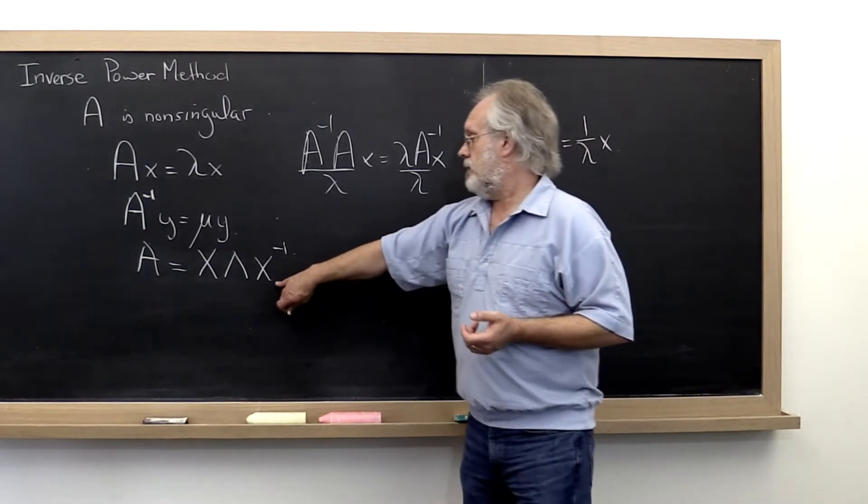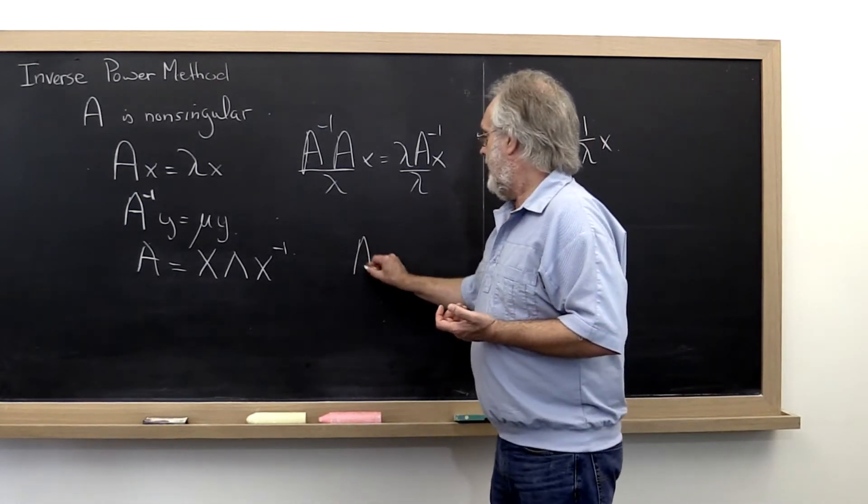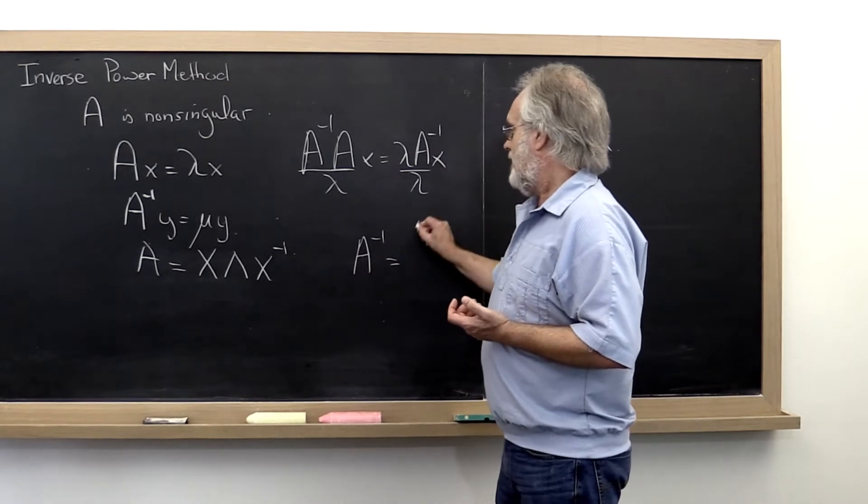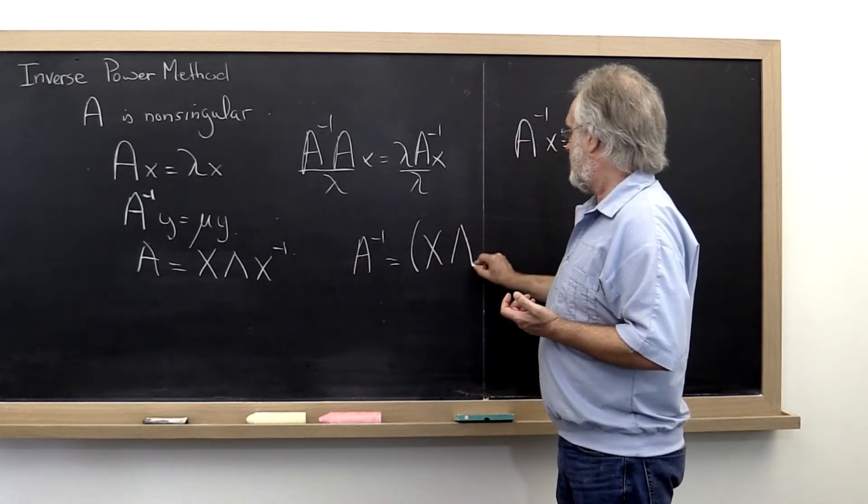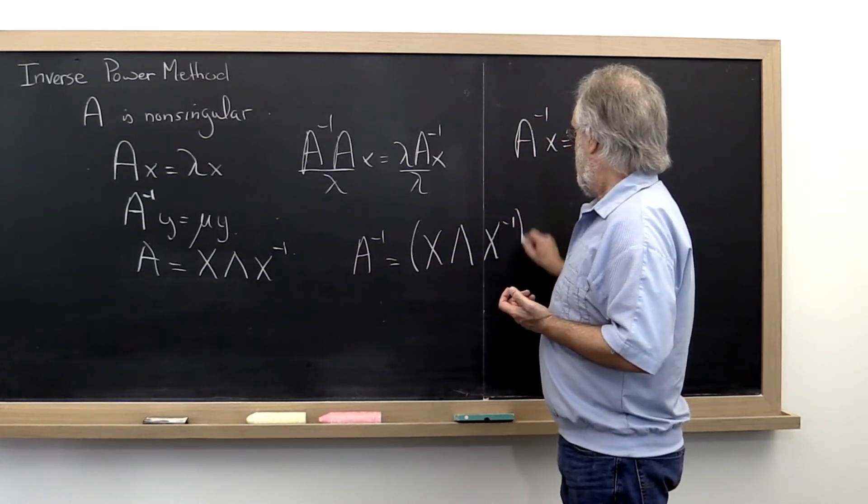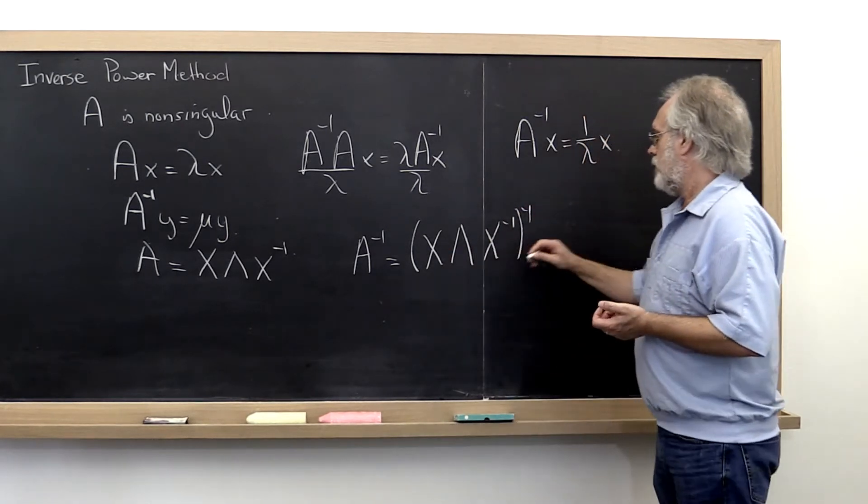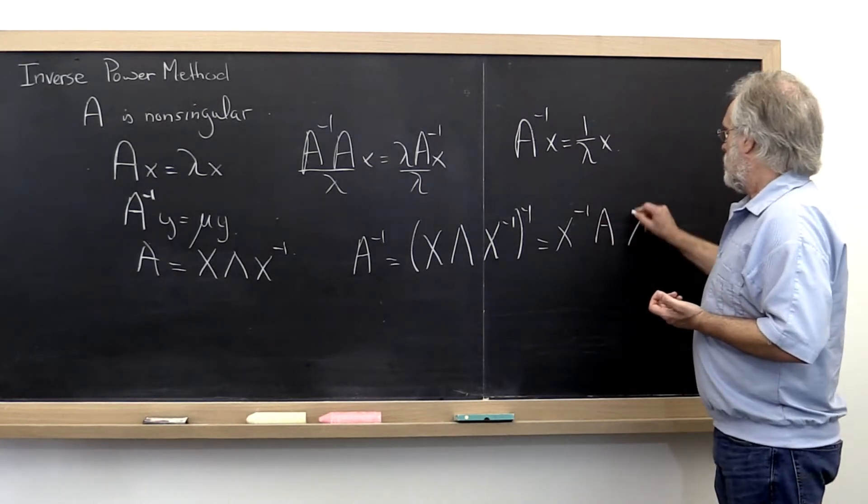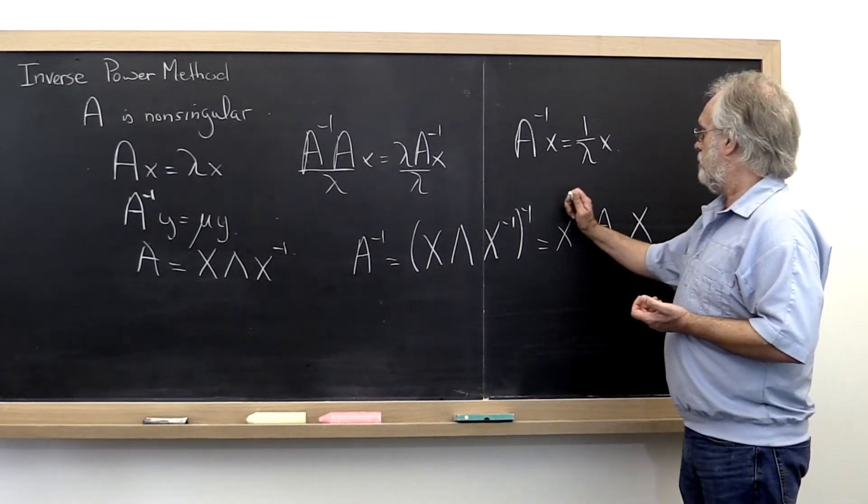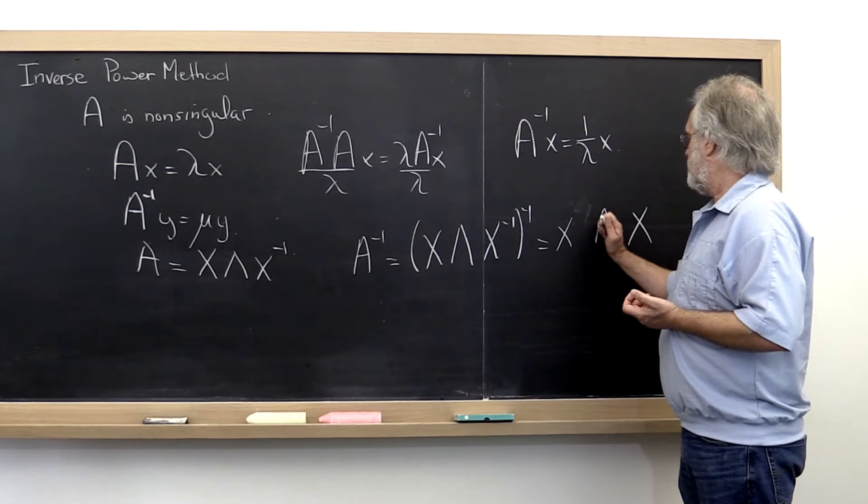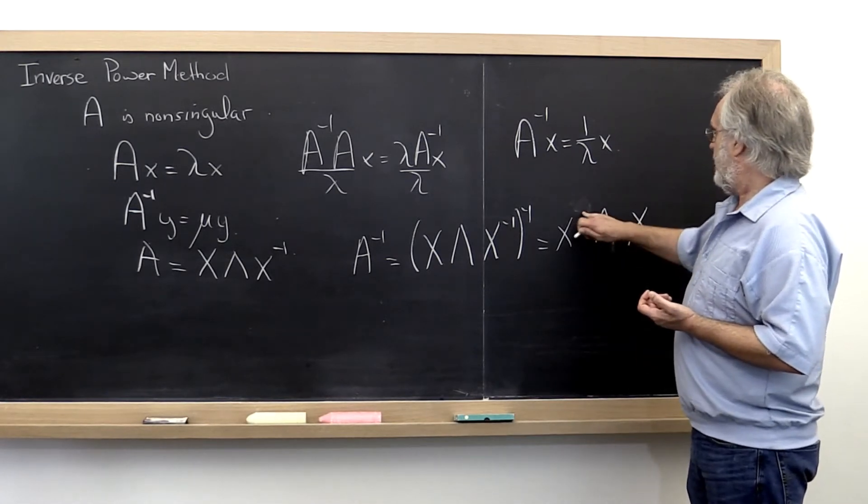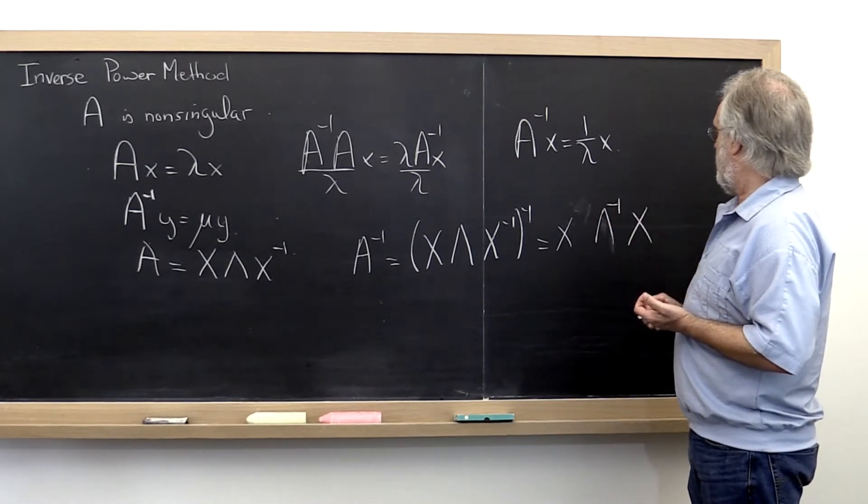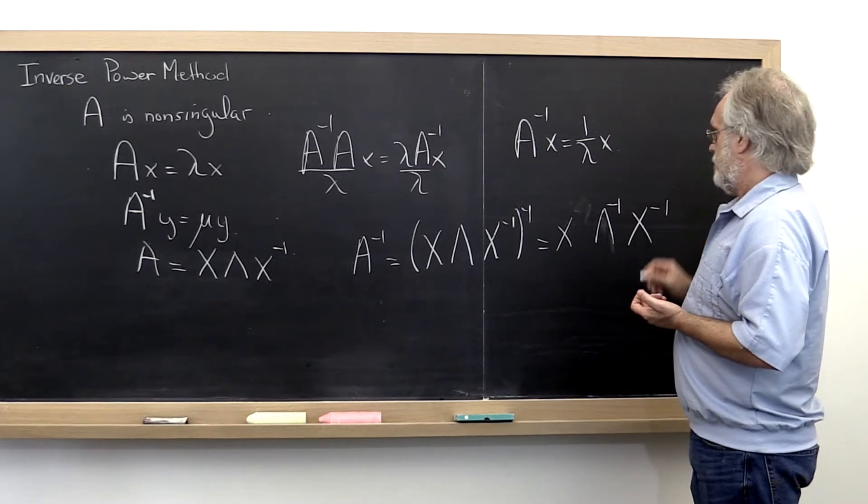Now what about this one? Well if we look at A inverse, that's the same as x lambda x inverse inverse. Well that's a matter of writing all of these in the opposite order and then inverting each of them. But inverting this, oops that should be a lambda. Inverting that gives you that. We get a lambda inverse here and x inverse here.